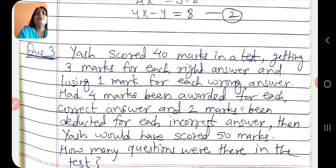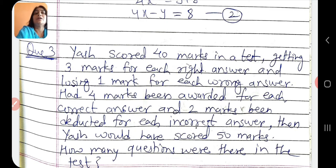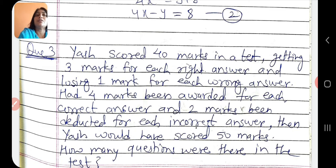Next question: Yesh scored 40 marks in a test, getting 3 marks for each right answer and losing 1 mark for each wrong answer. Had 4 marks been awarded for each correct answer and 2 marks been deducted for each incorrect answer, then Yesh would have scored 50 marks. How many questions were there in the test? Question mein kya given hai: kuch questions attempt kar raha hai Yesh, jitne questions ke answer correct deta hai unke liye 3 marks milenge, aur jitne wrong karta hai unke liye 1-1 ke hisab se 1 mark minus ho jayega, to usko 40 marks milte hain.